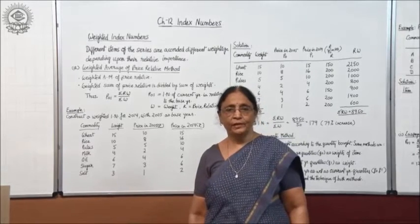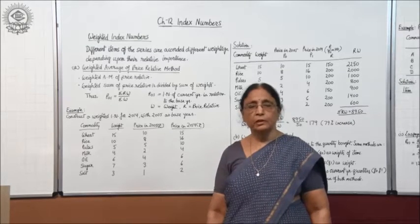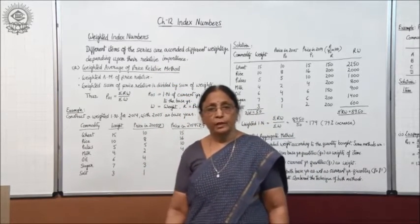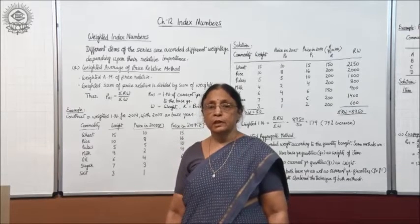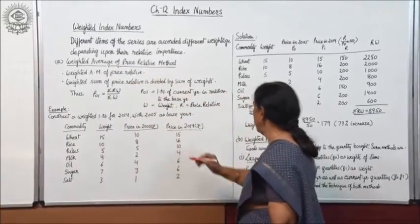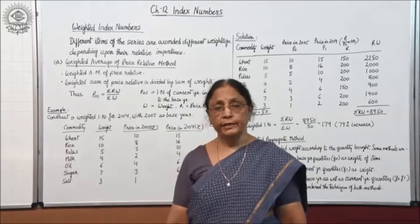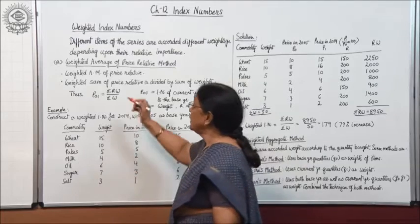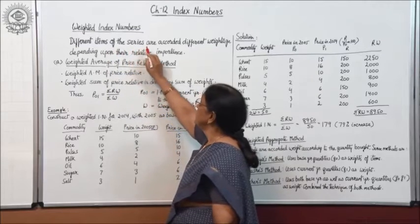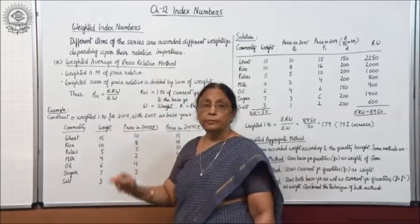Good morning, children. After learning the concept of simple index numbers, we move to the next one, that is weighted index numbers. Weighted index numbers are of two types: weighted average of price relative method, and weighted aggregate method. Under this, different items of the series are accorded different weightage depending upon their relative importance.